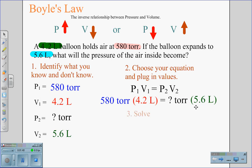We can now solve the equation. By rearranging the equation algebraically, 580 torr times 4.2 liters divided by 5.6 liters equals the second pressure. Using the calculator, we can solve for the second pressure and find that it is 435 torr.